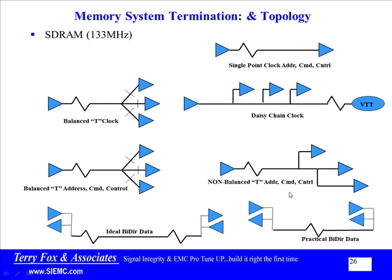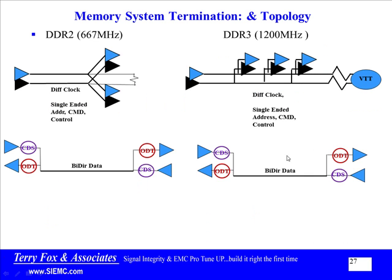If you are part of my class, we have labs to go through this. If you're picking this up off YouTube, go to SIEMC.com to get hooked up with labs. For DDR2, there's a differential clock as opposed to a single-ended clock, with schemes for differential terminations. DDR3 similarly has differential termination schemes, and may be terminated to VTT rather than power and ground. With DDR2 and DDR3, data bits got controlled drive strength and on-die termination, eliminating many board resistors and making life a lot easier.